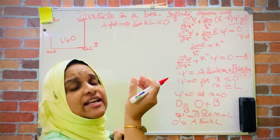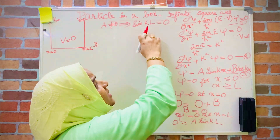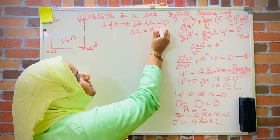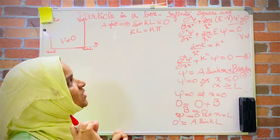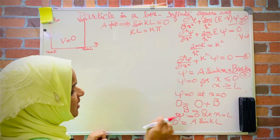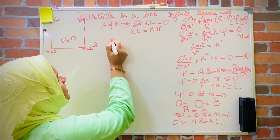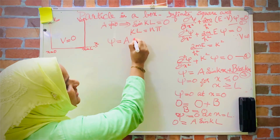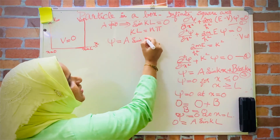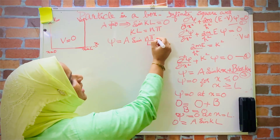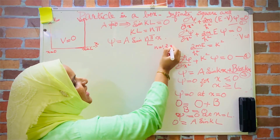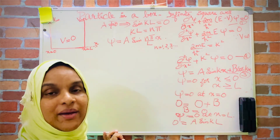sin(kL)=0 when kL = nπ, where n = 1, 2, 3, etc. This means k = nπ/L. Substituting this into our general solution, the wave function becomes ψ = A sin(nπx/L), where n = 1, 2, 3, etc.